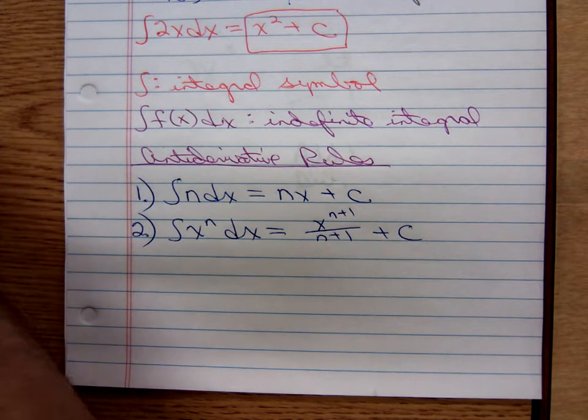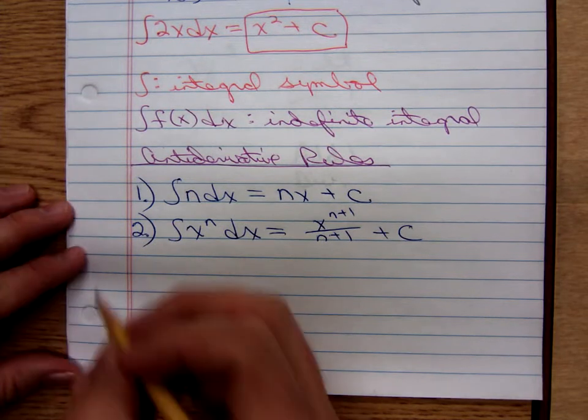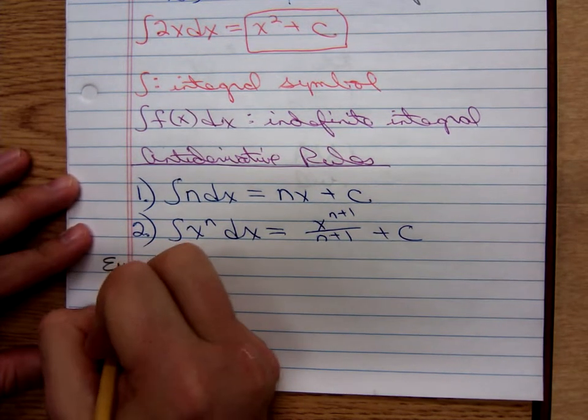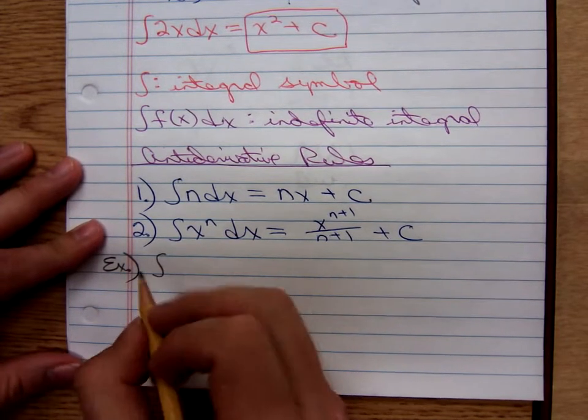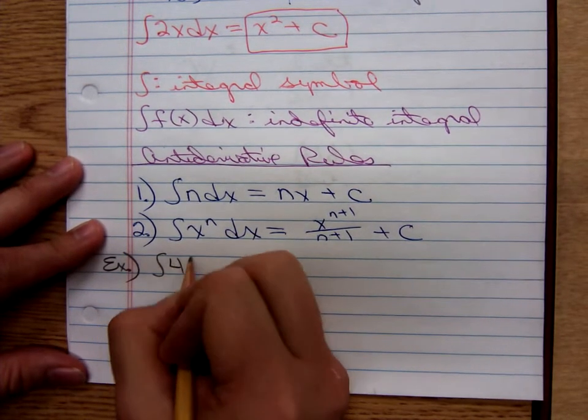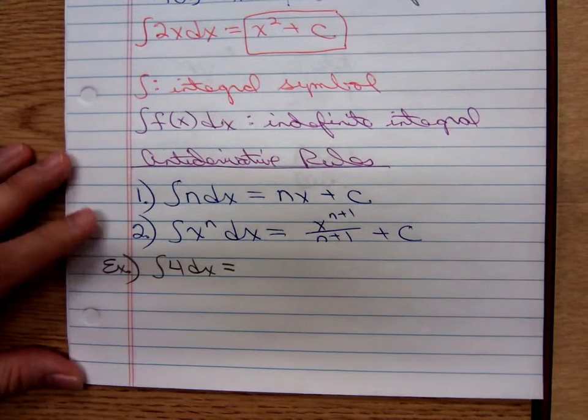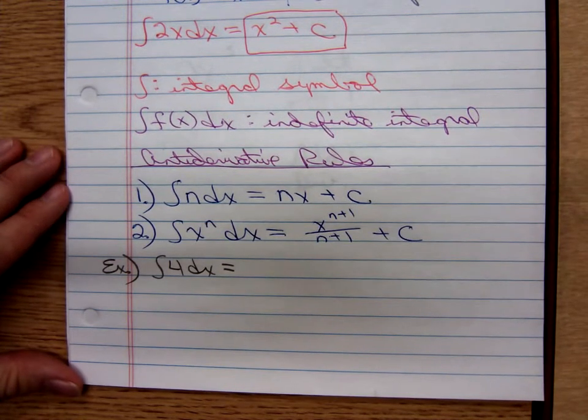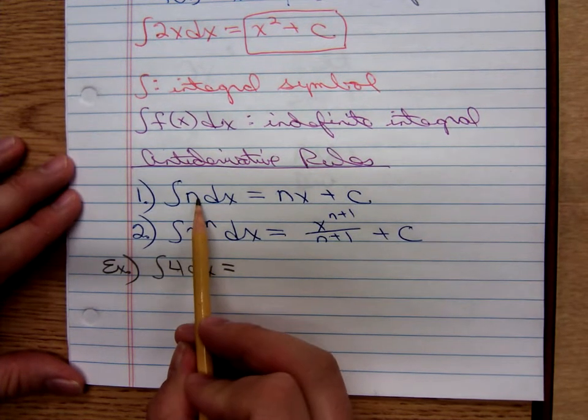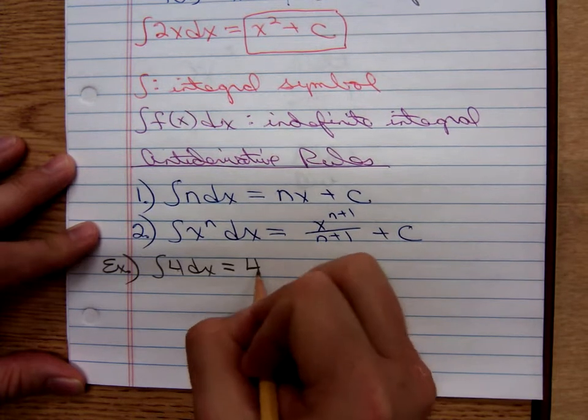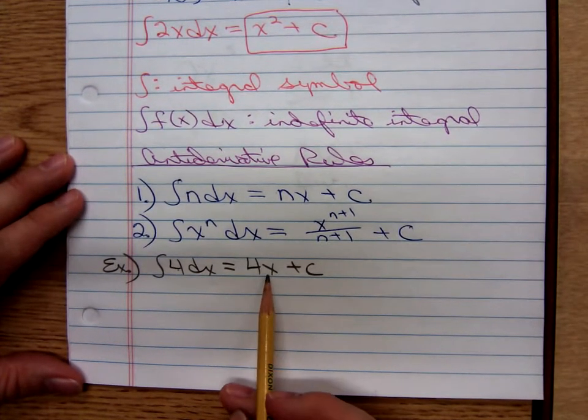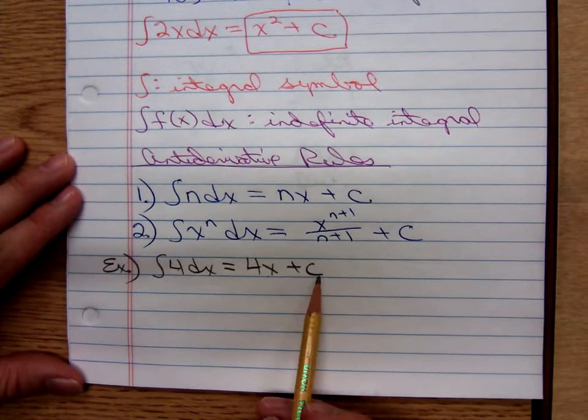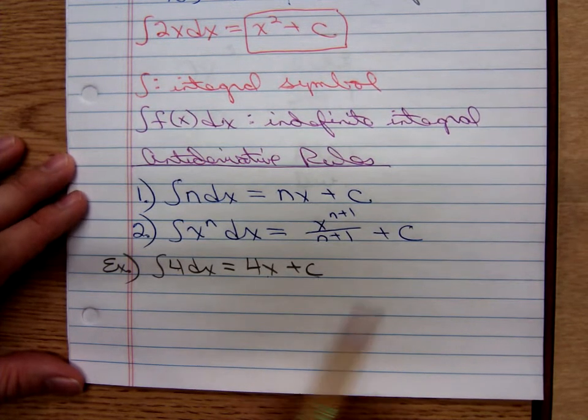Let's do, suppose I wanted the antiderivative of 4 in terms of x. The antiderivative of just a number by itself. That would be 4x + c. If you differentiate 4x, you get back 4. The derivative of a number by itself goes to 0.